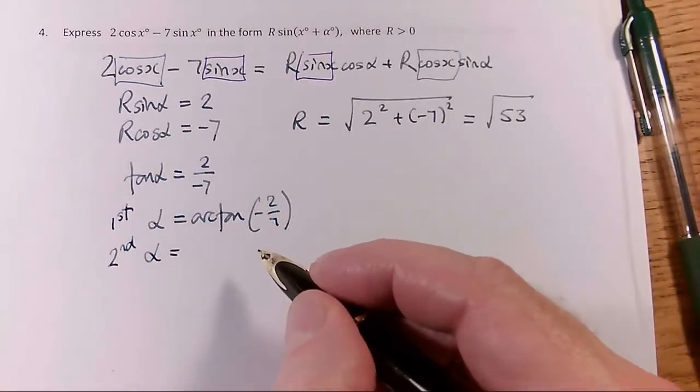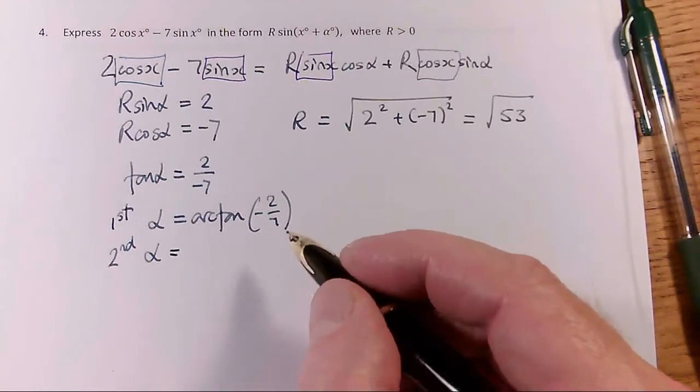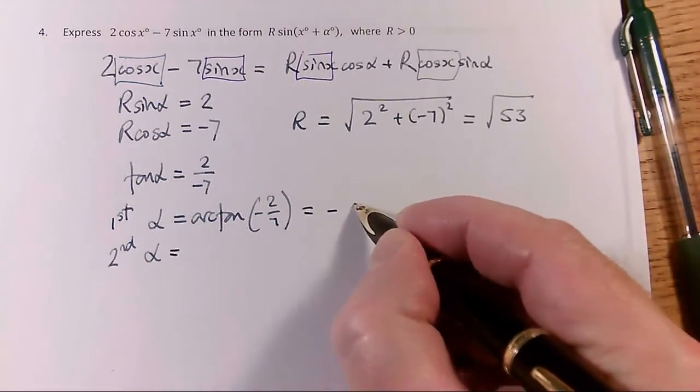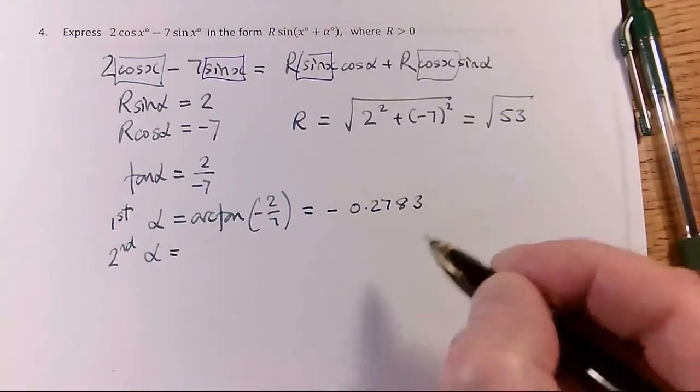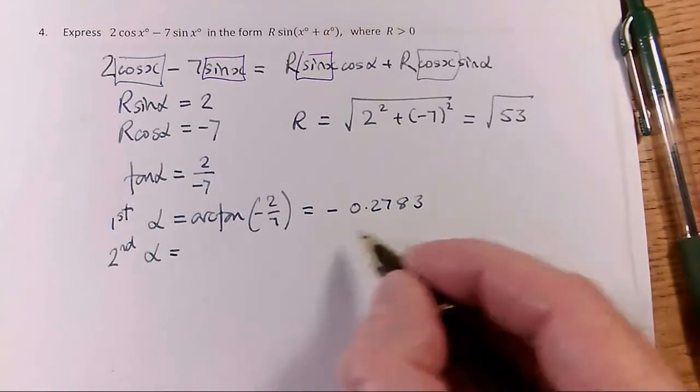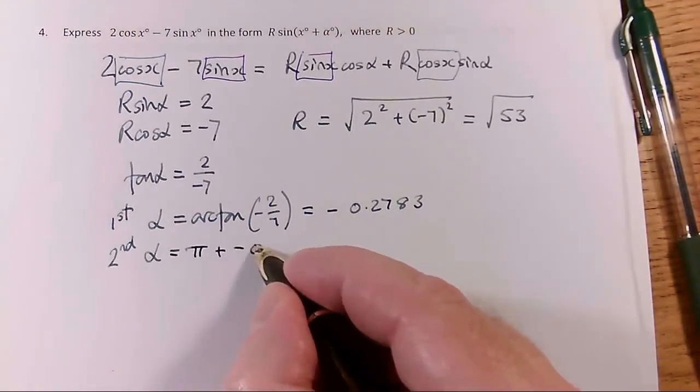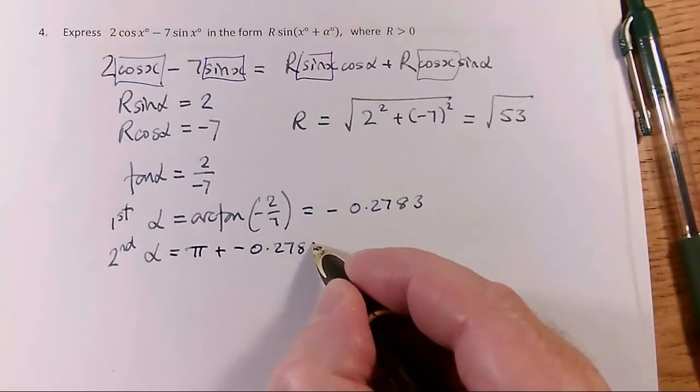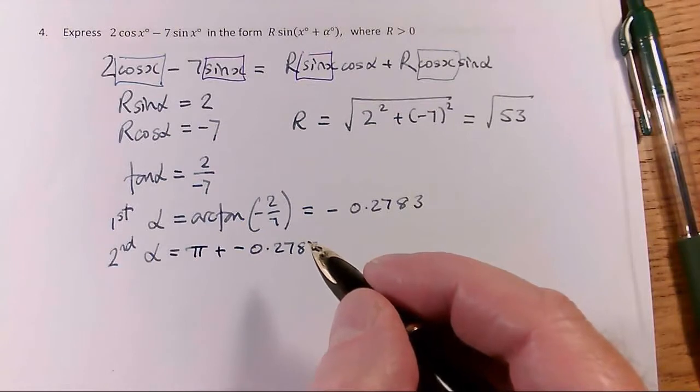So first one, doing the arctan of minus 2 sevenths is, just bear with me, 2 to the minus 7 equals, it's minus 0.2783, four significant figures, that many radians. And the second alpha I get is going to be pi plus my first alpha, plus minus 0.283. So I add pi to that solution, and I get... Oh, damn, I should have been working in degrees, shouldn't I? Because it's a question in degrees.